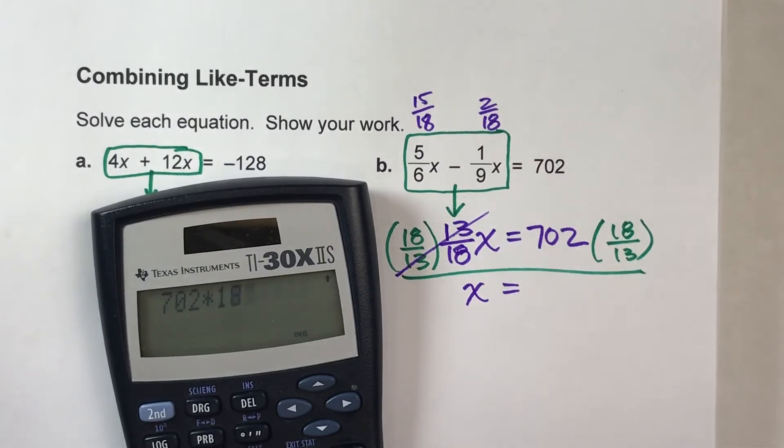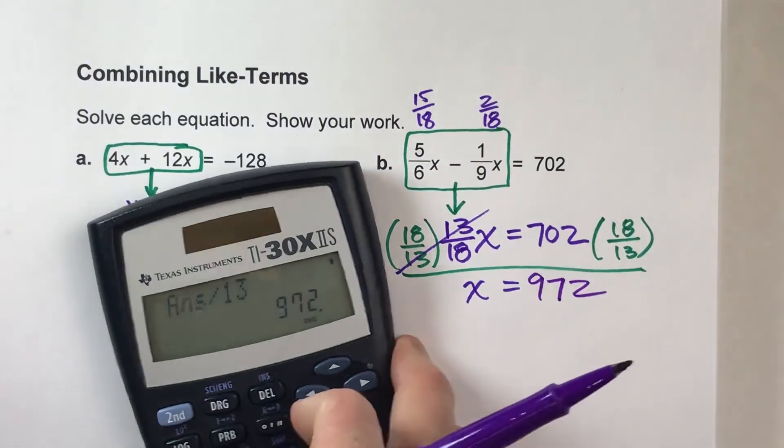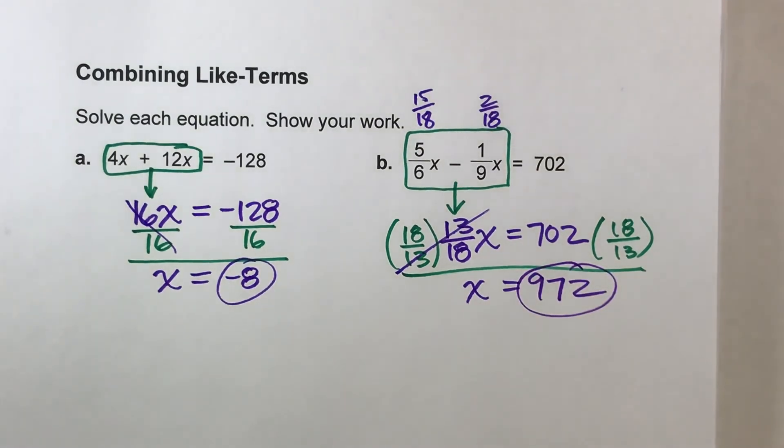702 times 18, then divided by 13, gives us 972. And that is our answer. All right?